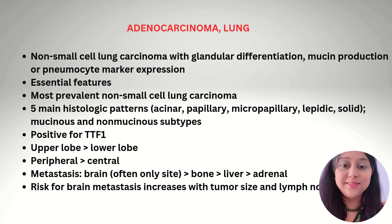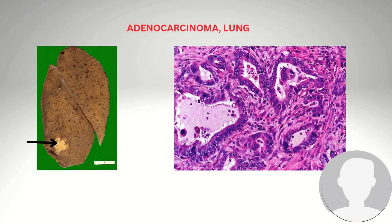The risk for brain metastasis increases with tumor size and lymph node involvement. The gross image and micrograph of lung adenocarcinoma show acinar structures lined by highly pleomorphic neoplastic cells.